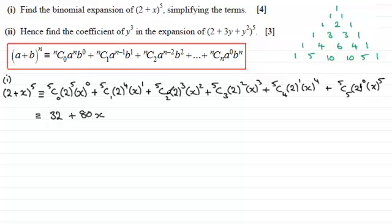This term, 5c2, either type it into your calculator as 5c2, you should find you get 10. 10 times 2 cubed, 2 cubed is 8, 10 times 8 is 80, so you're going to have 80 again, and it's going to be x squared. Next term up, 5c3 is another 10. So you've got 10 times 4. 10 times 4 is 40, so you've got 40x cubed.